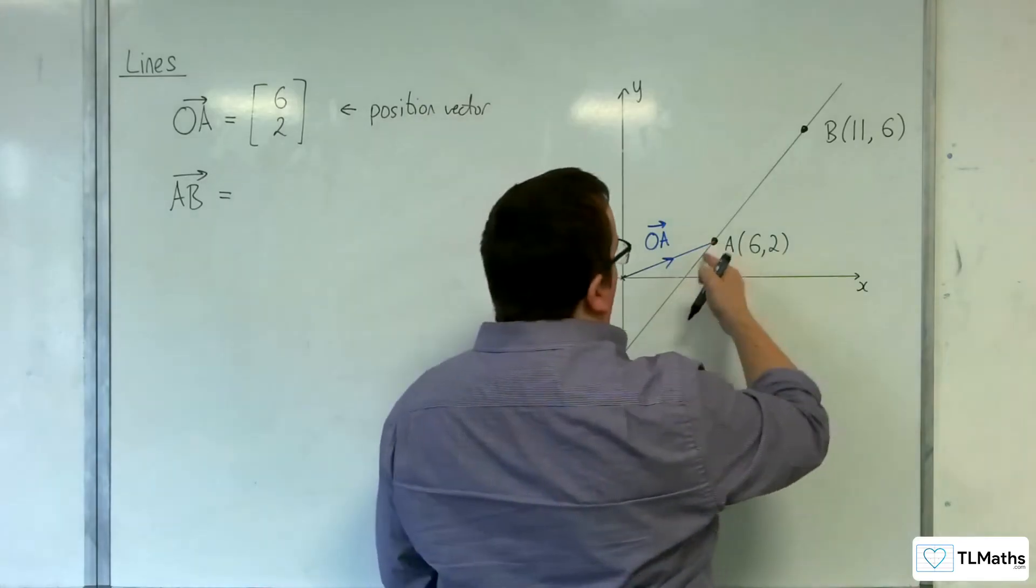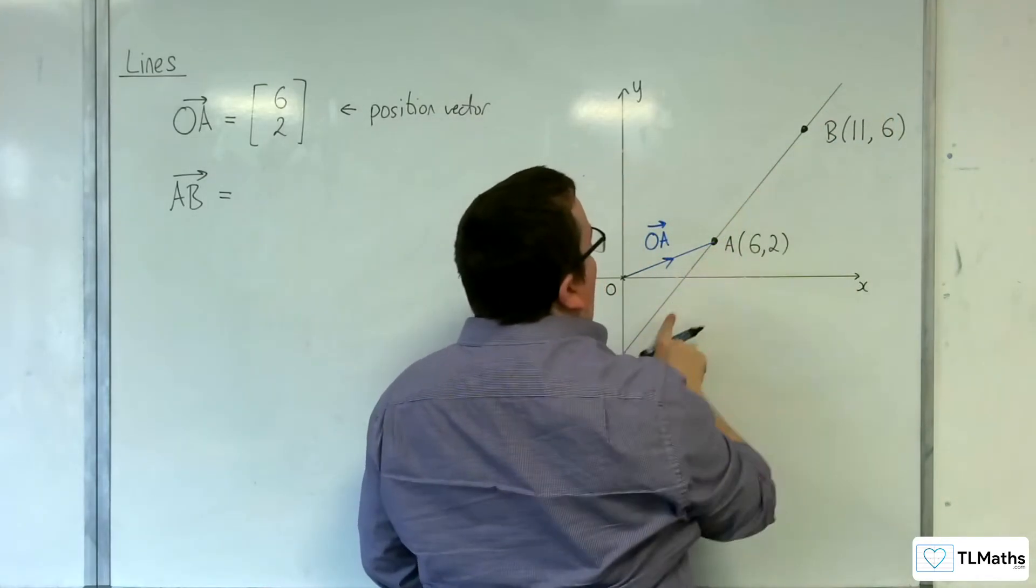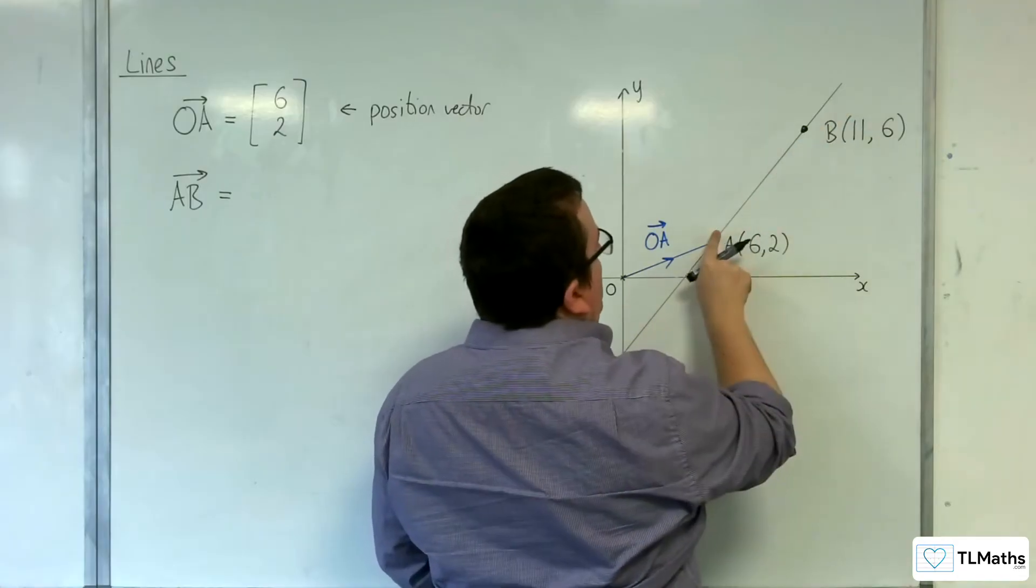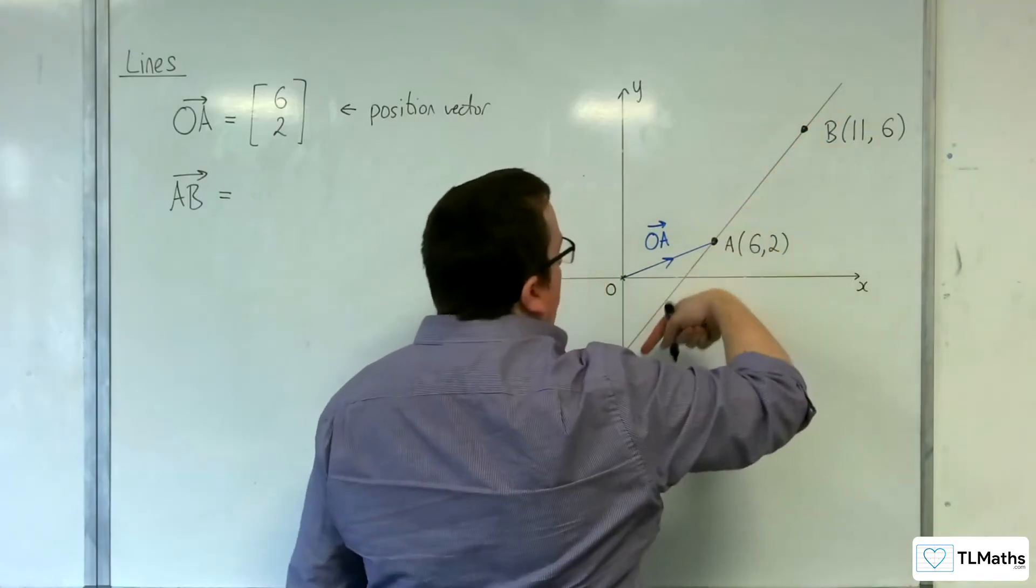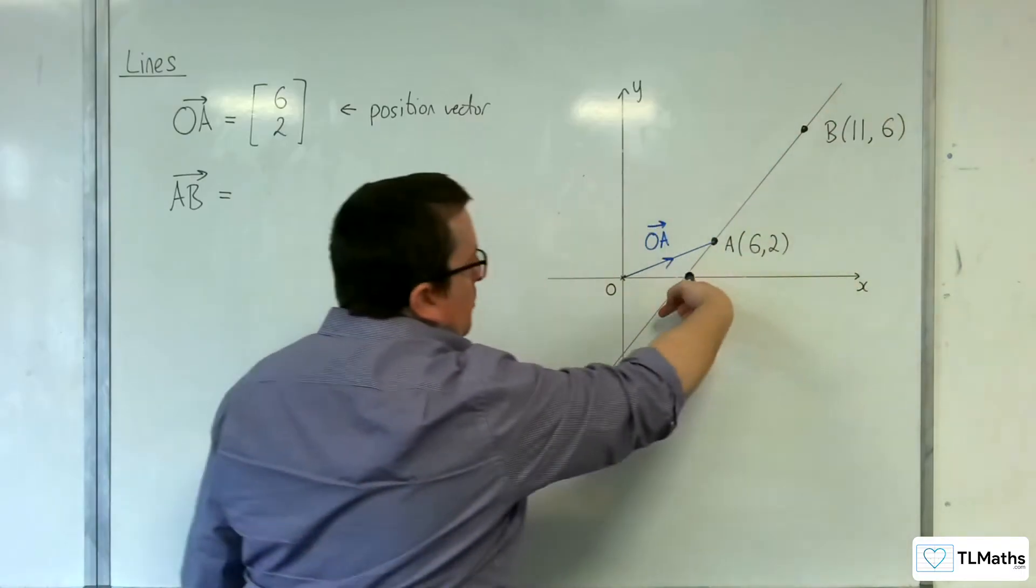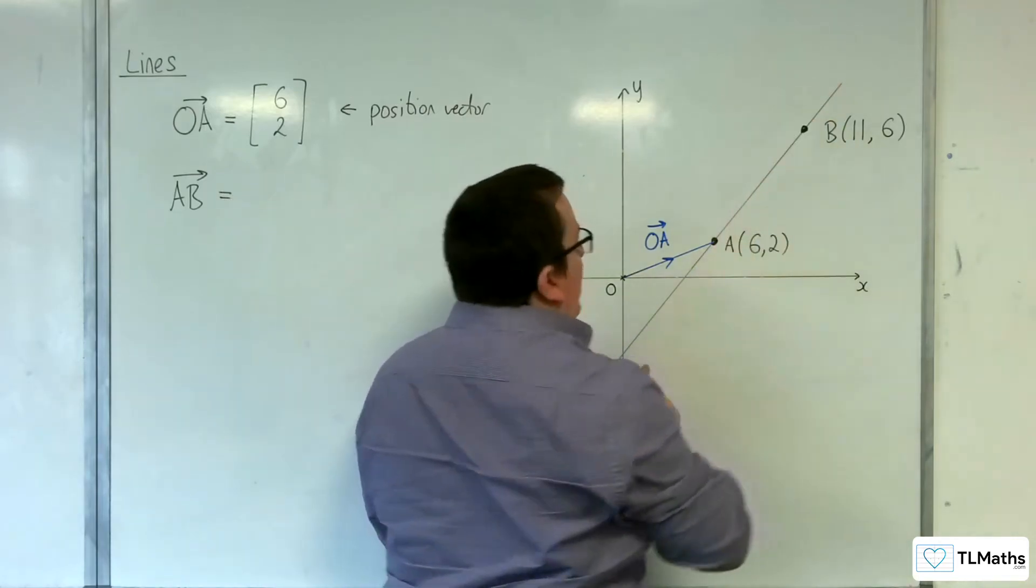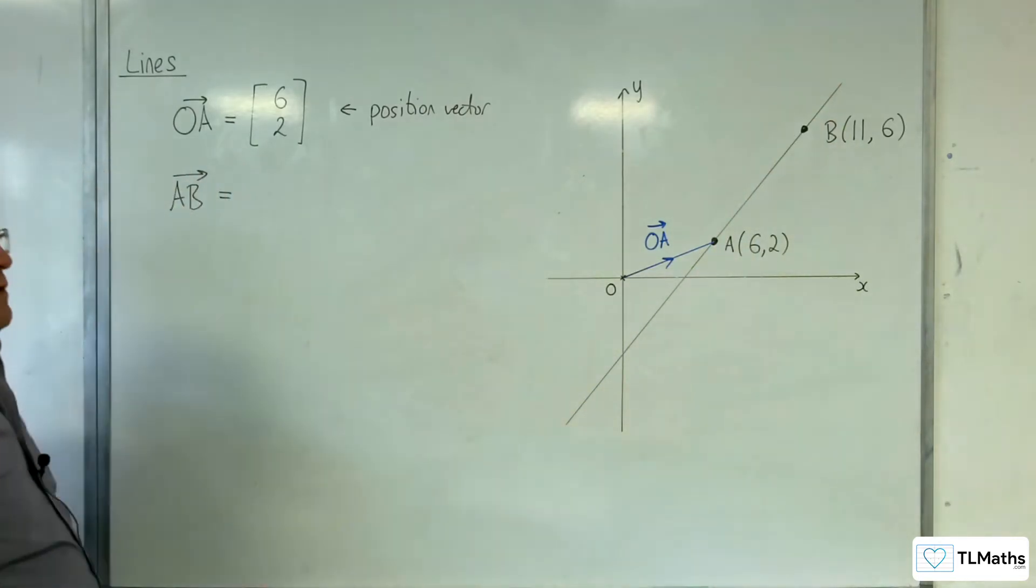Because regardless of whether I want to get to this point or that point, I need to be traveling in this direction. Either a positive AB or a negative AB, whether I need 1.5 lots of AB or minus 0.3 lots of AB. Whatever I need to do, I can travel along that line using that direction vector.